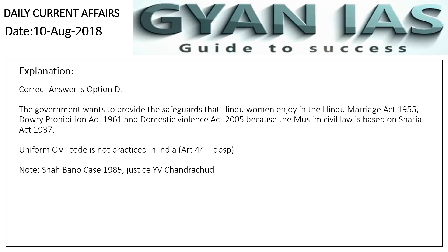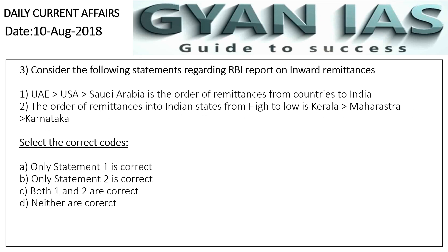Question 3: Consider the following statements regarding the RBI report on inward remittances. Statement 1: UAE, followed by USA, followed by Saudi Arabia, is the order of remittances from different countries into India. Statement 2: The order of remittances into Indian states from high to low is Kerala, followed by Maharashtra, followed by Karnataka. In this question, both statements 1 and 2 are correct — Option C.